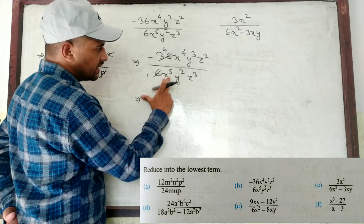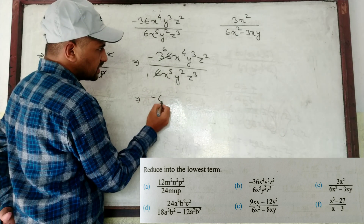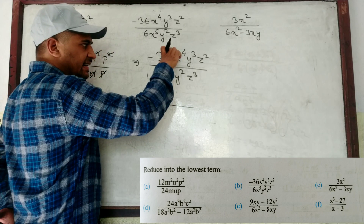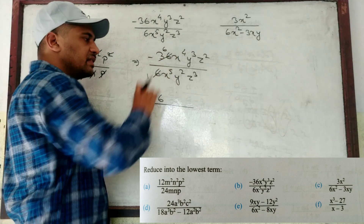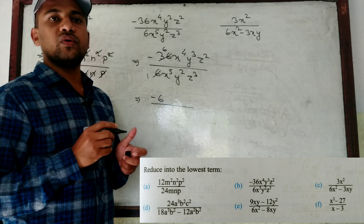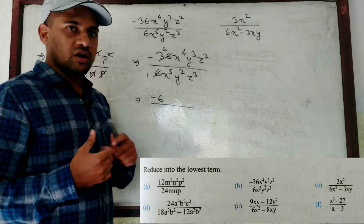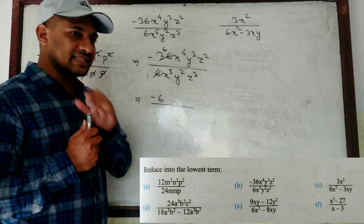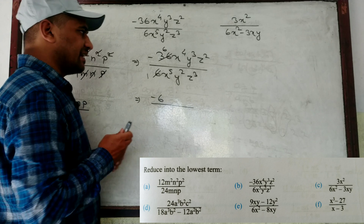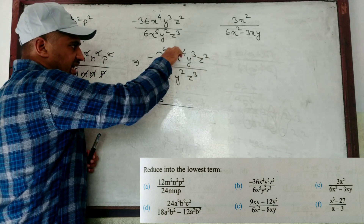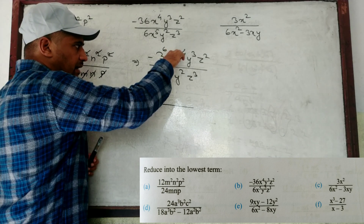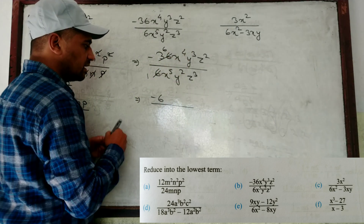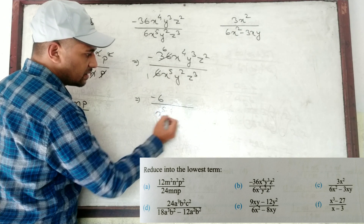Now look properly: here is X⁴ and here is X⁵. In division we have to subtract the powers — this is the law of indices. If you don't know the formula for law of indices, go to my playlist where I have a formula playlist. Here 5 is greater and 4 is smaller, so take the 4 downside. We write X to the power 5 minus 4.